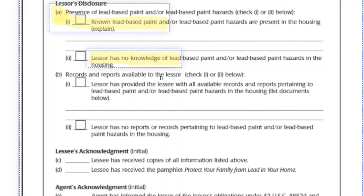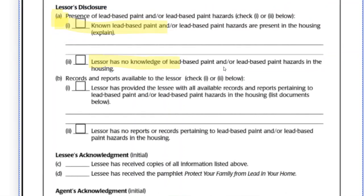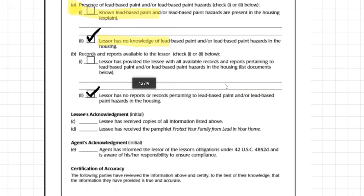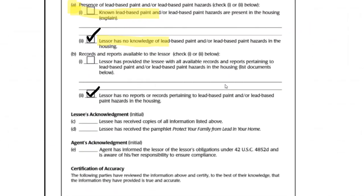They would say the lessor or seller has no knowledge — which would be A2 — and has no records. If they do have knowledge and records, then obviously you must disclose that. There is a C portion that says all copies of the records will be submitted to the buyer. Letter D says that the lessee — which would be the buyer — has received copies of the HUD form called 'Protect Your Family from Lead and Home.' The buyer has a 10-day window to check for lead, or he can waive it.